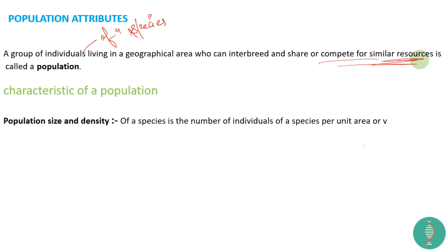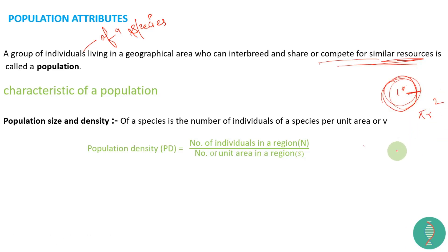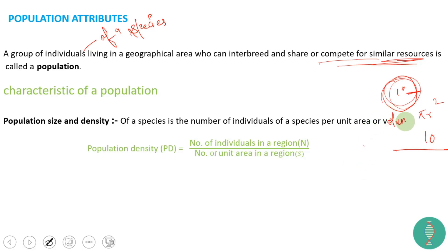The characteristics of a population include population size and density. Population density is the number of individuals of a species per unit area — calculated by dividing the number of individuals by the total area (using pi r squared for a circular region). For aquatic populations, we use volume instead of area.